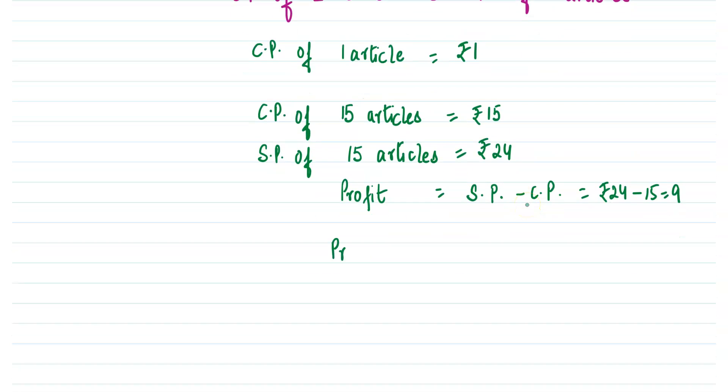So what will be the profit percent? So profit percent can be calculated by this formula. Profit over CP into 100%. So we have 9 and CP was 15 into 100%. So let's simplify this. We get 3 over 5. And we can cancel this thing out. So 3 times 20 is 60%. So 60% is the answer.